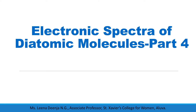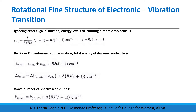Hi everyone. Through this class we are going to study about rotational fine structure of electronic vibrational transitions. Ignoring centrifugal distortion, the energy levels of a rotating diatomic molecule is h divided by 8π²Ic times J(J+1), where h is Planck's constant, I the moment of inertia, c the velocity of light, and J the rotational quantum number, which can take values 0, 1, 2, 3, etc. Since h divided by 8π²Ic is the rotational constant B, the energy of the rotating diatomic molecule is BJ(J+1) cm⁻¹.